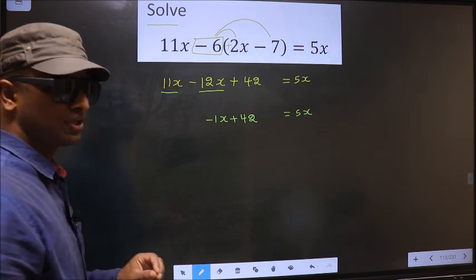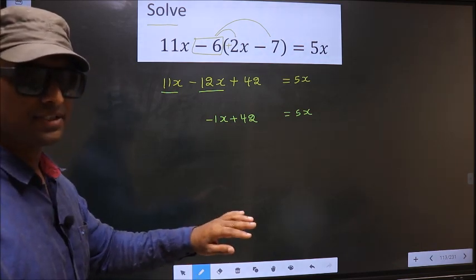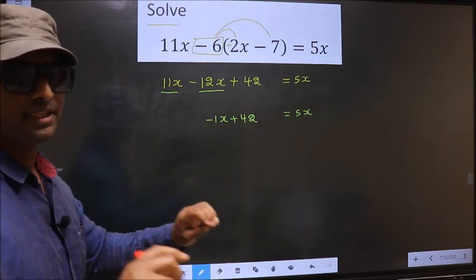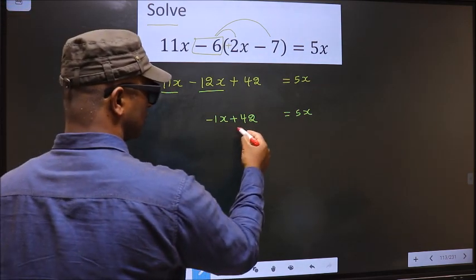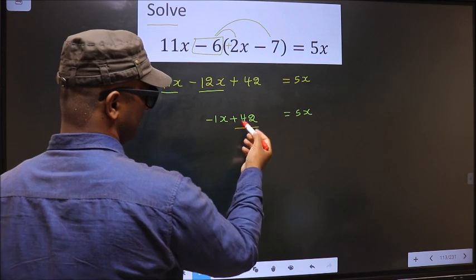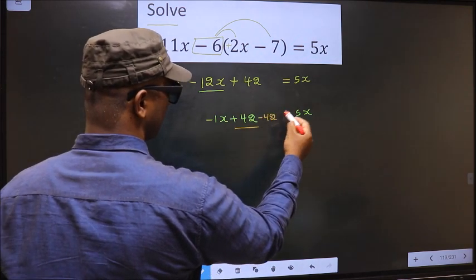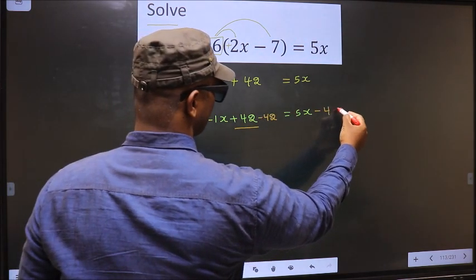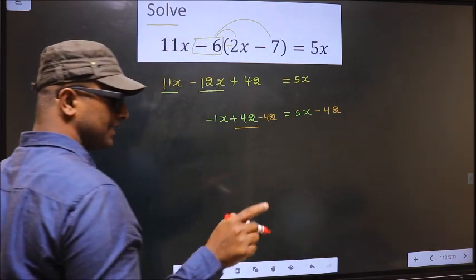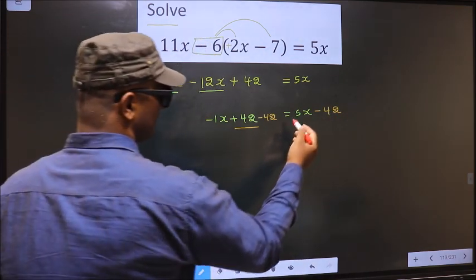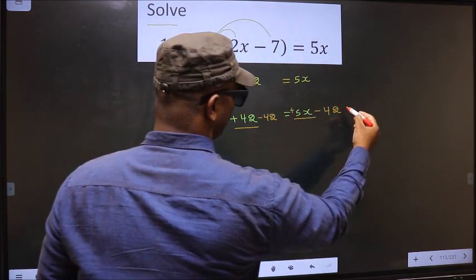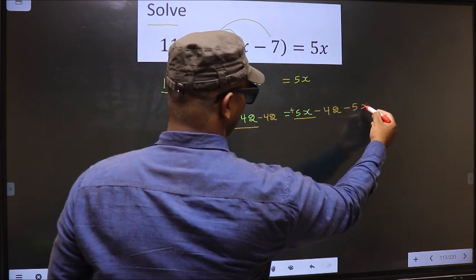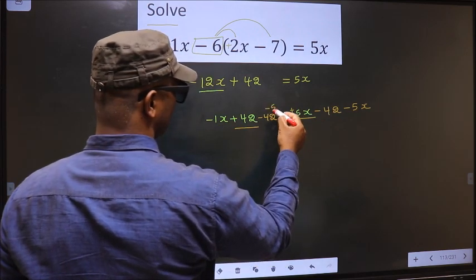Now you should put all the x terms on one side and the numbers on the other side. What I mean is, plus 42 should not stay on this side, so to remove plus 42 you subtract 42 on both sides. In the same way, plus 5x should not stay on this side, so to remove plus 5x you subtract 5x on both sides.